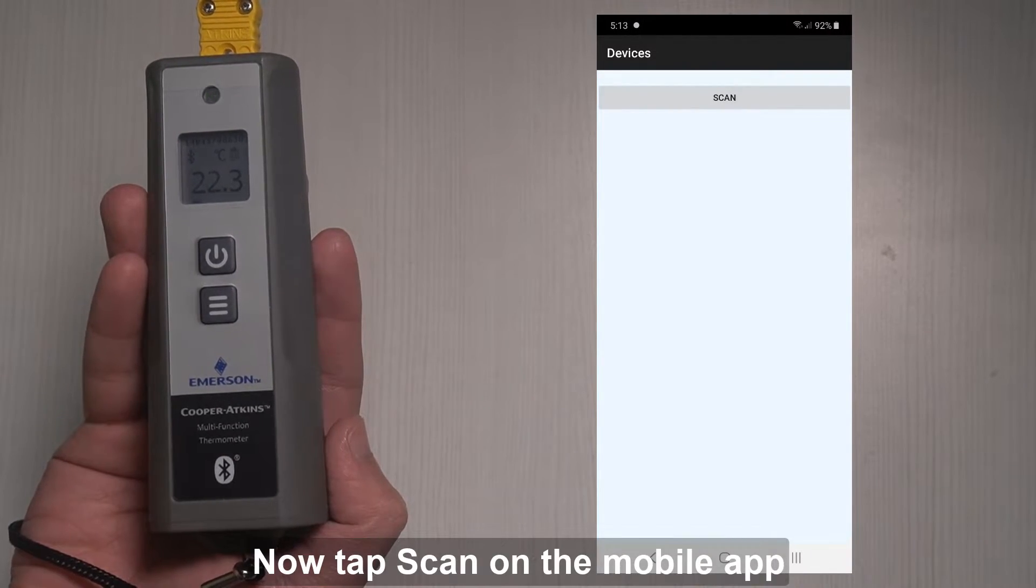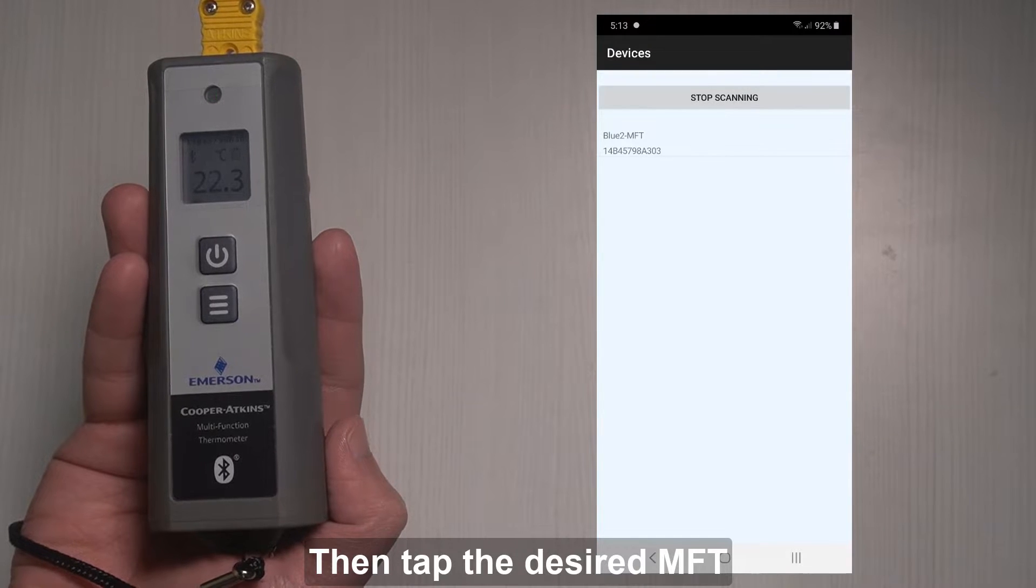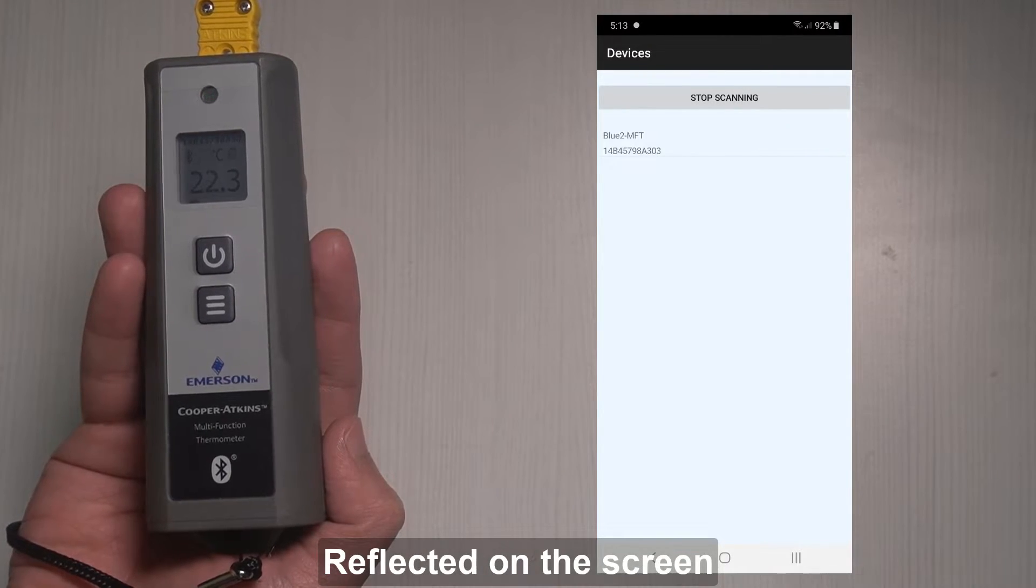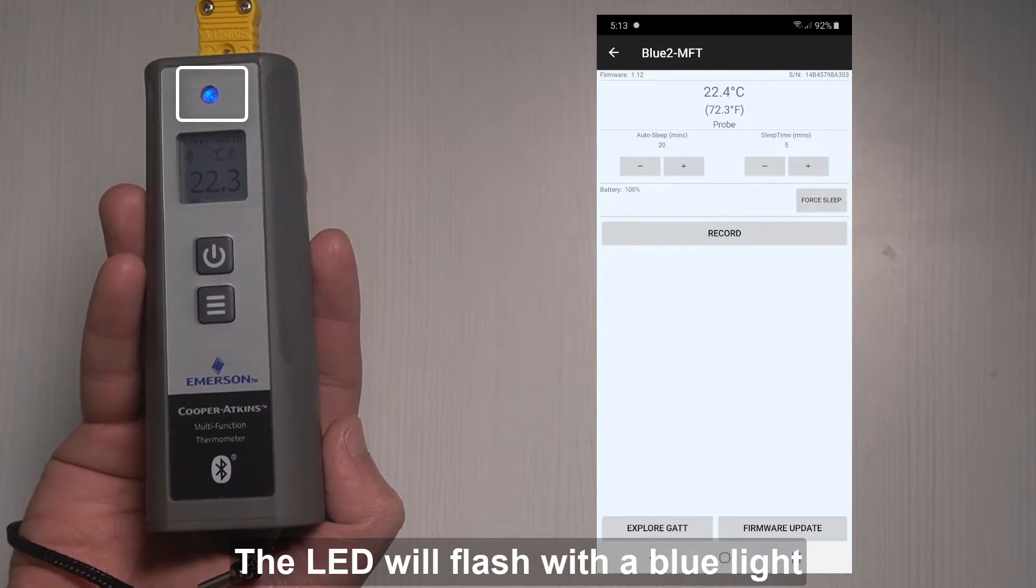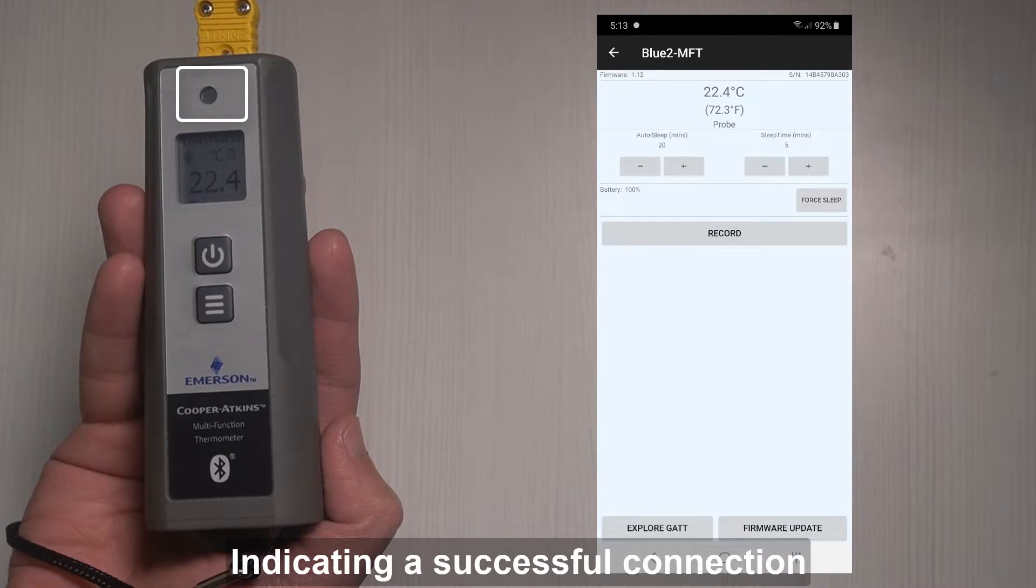Now tap Scan on the mobile app, then tap the desired MFT reflected on the screen. The LED will flash with the blue light, indicating a successful connection.